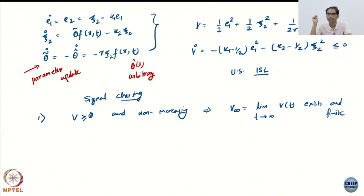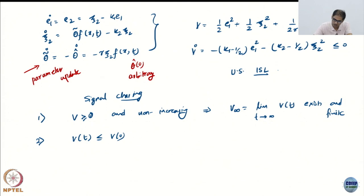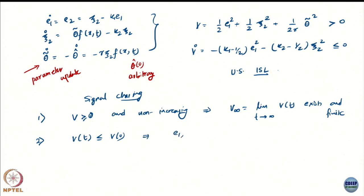That was the first step. The second step: we look at boundedness of all signals in V. It is very obvious that V(t) is less than or equal to V(0), because V is non-increasing. This means none of these quantities can become unbounded if they started bounded — which implies e1, psi2, and theta-tilde are all bounded signals.